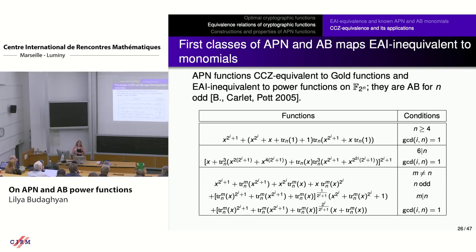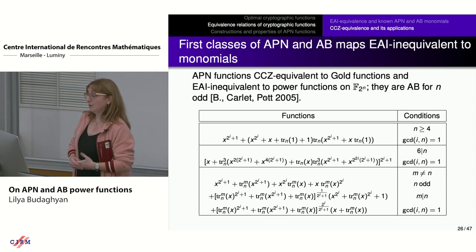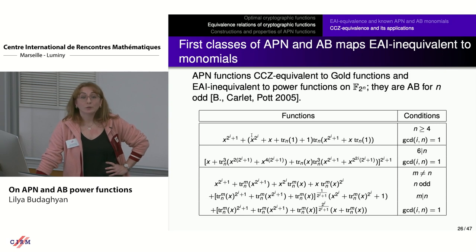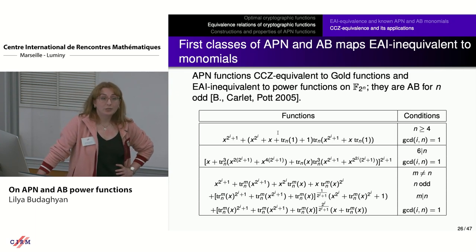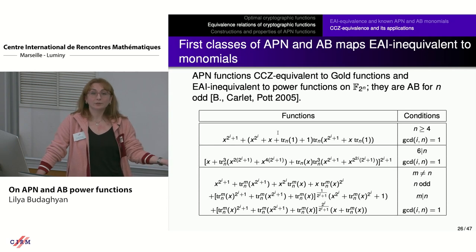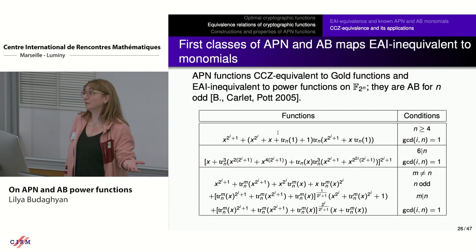We took the Gold power APN function, applied CCZ equivalence, and constructed EA-inequivalent polynomials — the first infinite families of APN and AB maps EA-inequivalent to monomials. For n odd, they are almost bent. The first one was an AB function for n odd which is EA-inequivalent to any permutation, disproving that conjecture. Moreover, it turns out that most AB functions are not CCZ equivalent to any permutation — so there had been a big misconception about these functions.